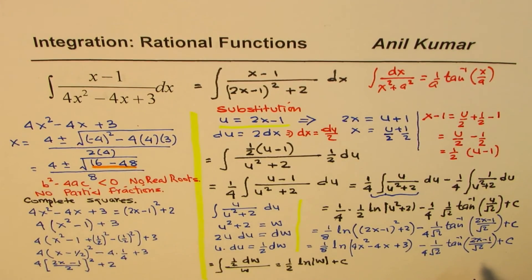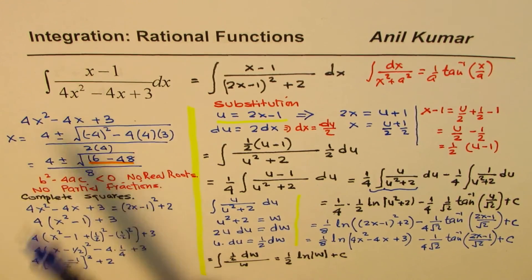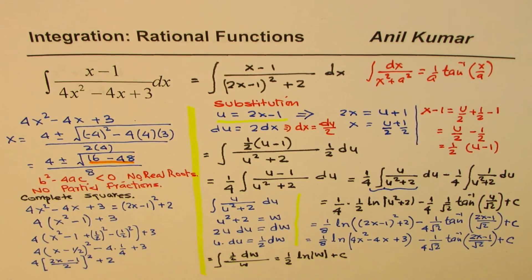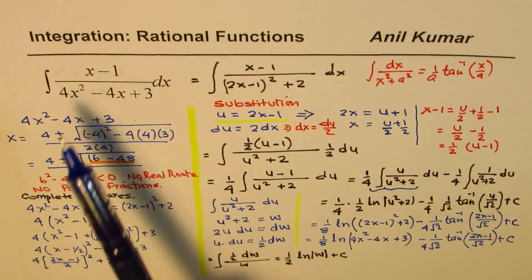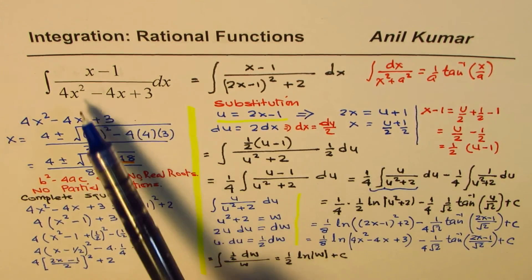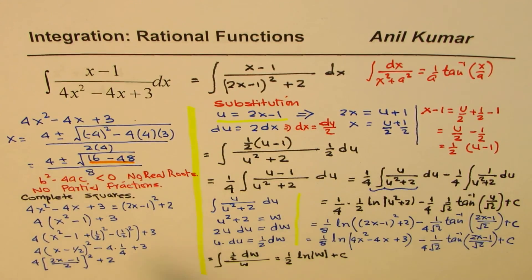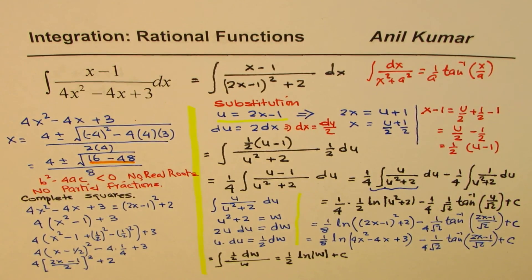So the final answer is one-eighth ln of 4x squared minus 4x plus 3, minus one over 4 square root of 2 times arctan of the quantity 2x minus 1 over square root of 2, plus C. To summarize the techniques for integrating rational functions: if the numerator degree is higher than or equal to the denominator, divide first. If the denominator factors, use partial fractions. If the denominator cannot be factored, complete the square, substitute, and apply the arctangent formula.